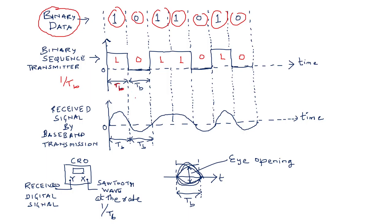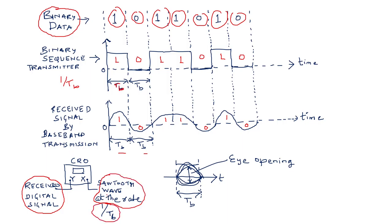In the distorted received waveform, logic one looks a certain shape, logic zero looks like another shape, and each of the bits — one, one, zero, one, zero — all appear with distortion but are still referenced to the same time period Tb. This received waveform is applied to the Y deflection plates of the CRO, and a sawtooth waveform at rate 1/Tb is applied to the X deflection plates.